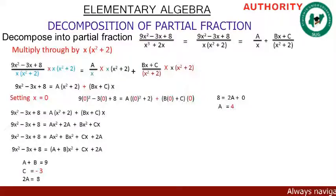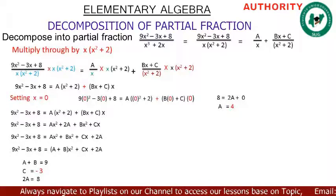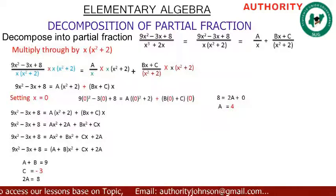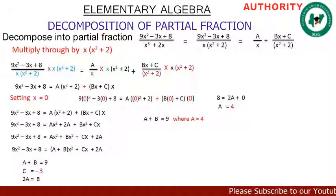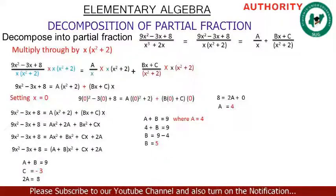Comparing the constant terms: left side gives 8, right side gives 2A, so 2A = 8, confirming A = 4. From A + B = 9, substituting A = 4 gives 4 + B = 9, so B = 5. We now have A = 4, B = 5, C = -3.